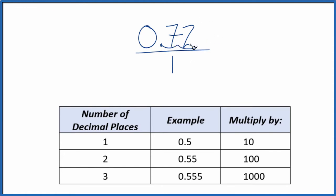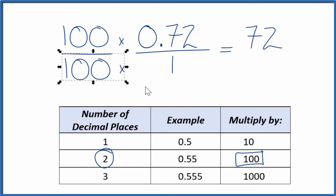To get this to be a whole number, since it has two decimal places, we multiply it by 100. So we take 0.72 times 100, and that gives us 72, which is a whole number. But we can't just multiply the numerator by 100; we also have to multiply the denominator by 100 as well.